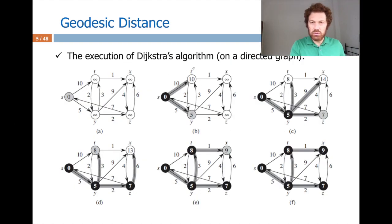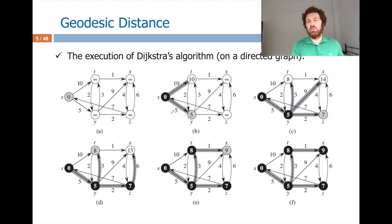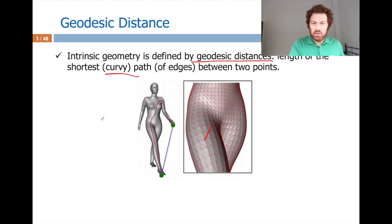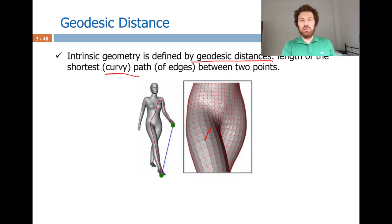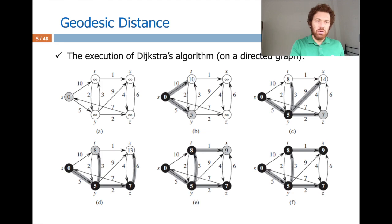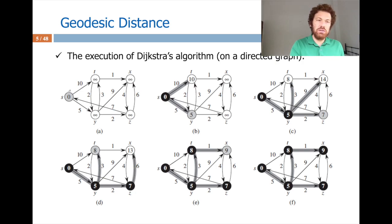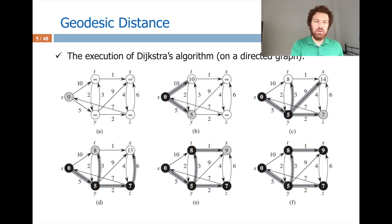Let me briefly walk through Dijkstra over an example. The task is to find all shortest paths from source s to other vertices in the mesh, which is an undirected graph with vertices and edges. Inside each vertex circle, I write the shortest path length. Initially these are unknown, so infinity. The shortest path from s to s is obviously zero. I put all vertices into a min-heap — a priority queue — based on these key values. Since zero is minimum, s sits at the root.